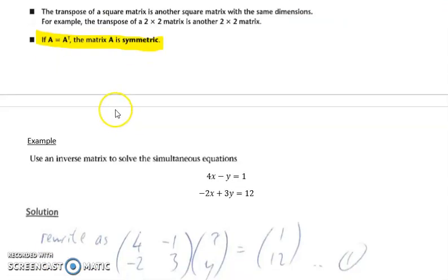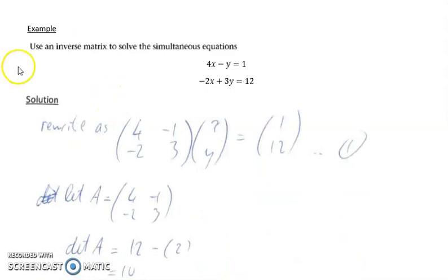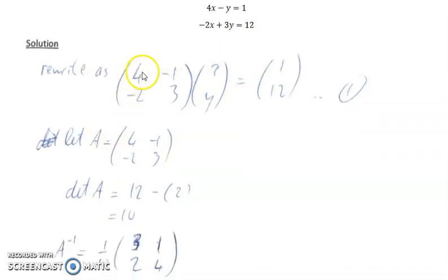We're going to look at how we use the matrix method to solve simultaneous equations. You can solve this using normal simultaneous equations methods, but if they ask for an inverse matrix method, you have to do it that way. You can rewrite this equation as the matrix 4, minus 1, minus 2, 3 times the column vector xy equals 1, 12. We call that equation 1. Let A equal this coefficient matrix.